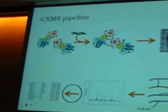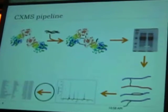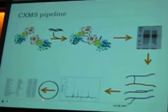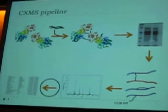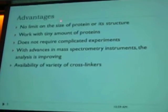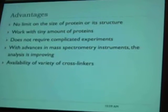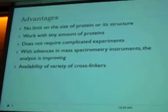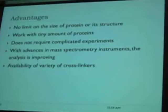This data analysis step is really the bottleneck of this problem. Mass spectrometry instruments are getting better and better, becoming more sophisticated, but we are not employing the data analysis accordingly. My research deals with this part — including the data analysis — really integrating what mass spectrometry is doing. One advantage of this method is there is no practical limit on the size of the protein or its structure; we can work with anything. It requires a small amount of protein and does not require complicated experiments.